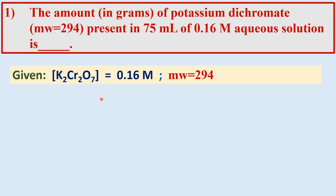Let us write the given data. The concentration of potassium dichromate is 0.16 molar, and its molecular weight is also given as 294 gram per mole.